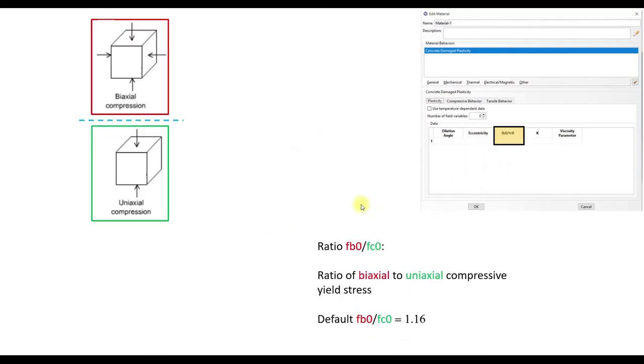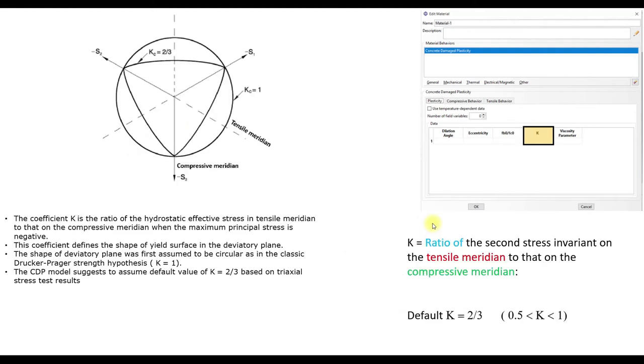The next value is the ratio of FB0 to FC0. It's the ratio of the biaxial compressive yield stress to the uniaxial compressive yield stress. And the default ratio is 1.16.